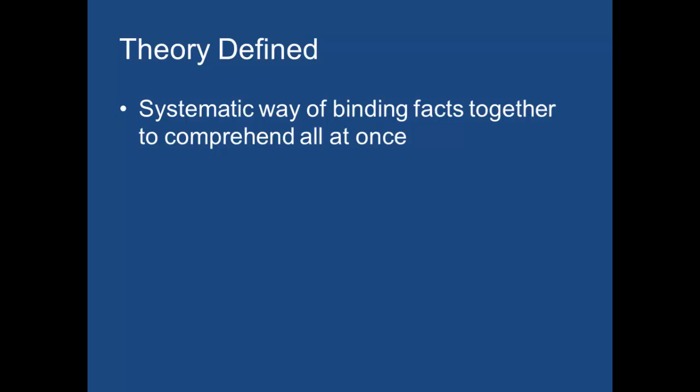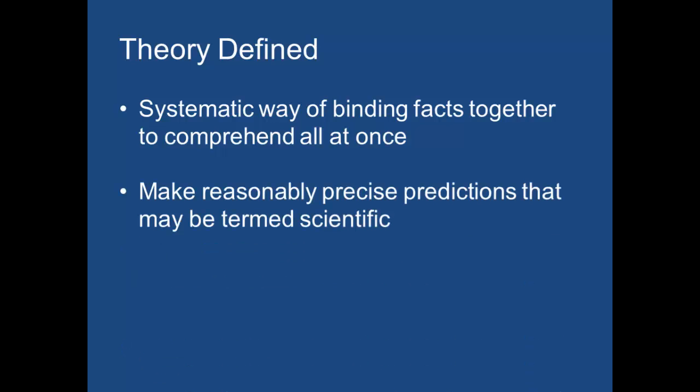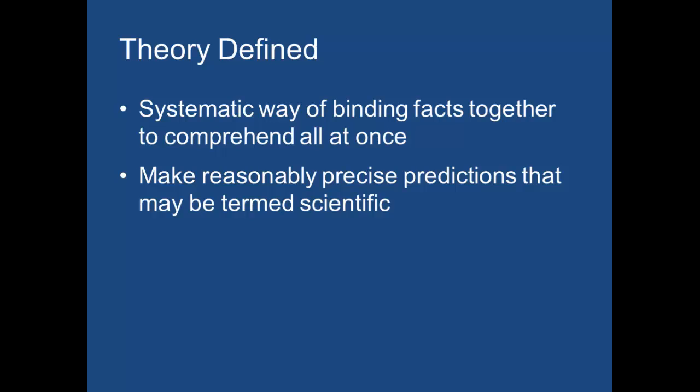So when someone says, oh, that's just a theory, it's another misuse of the term when we're looking at it in the social as well as the hard sciences. Because what we're looking at is the way that we construct knowledge. Because what it also allows us to do, not only are we pulling all this information together, but we're actually, based on our observations, able to make pretty precise predictions that could be termed scientific.